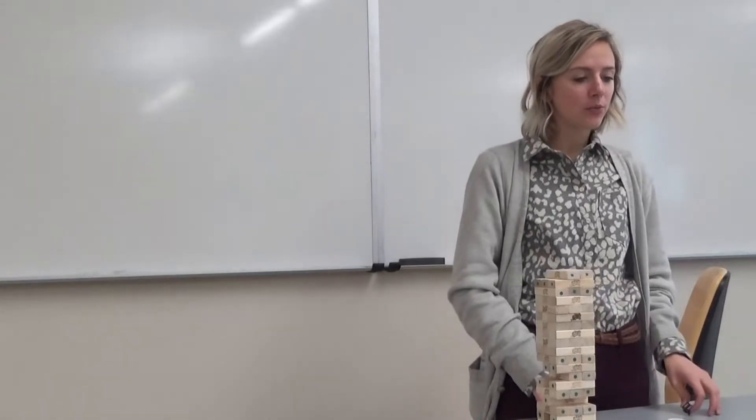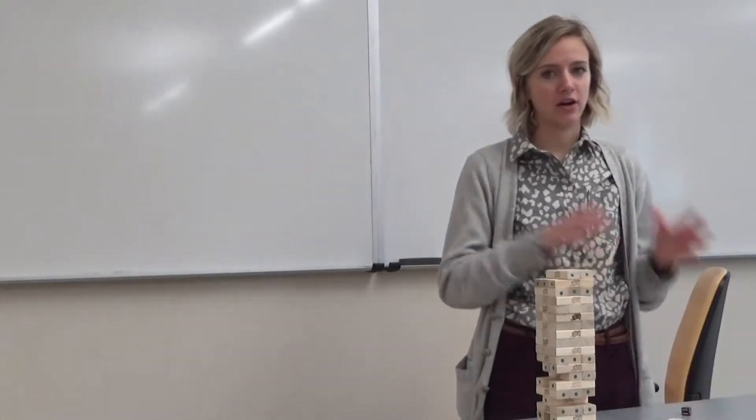Next it says obtain the data on the number of plays until collapse from each group in the class and make a graph that includes information about the number of plays and the community type. So invaded or not.